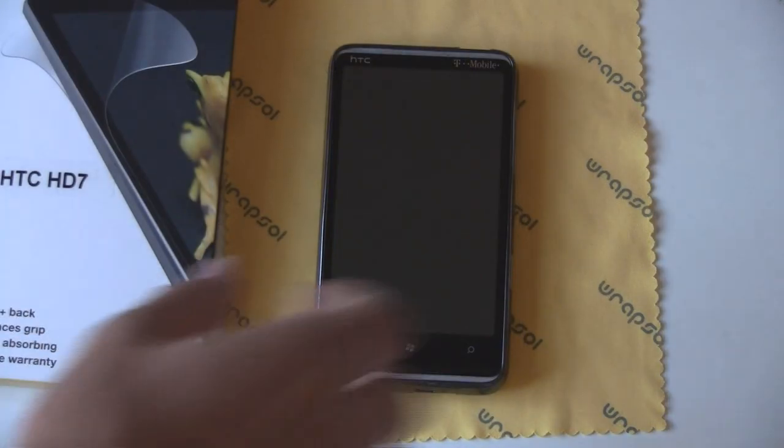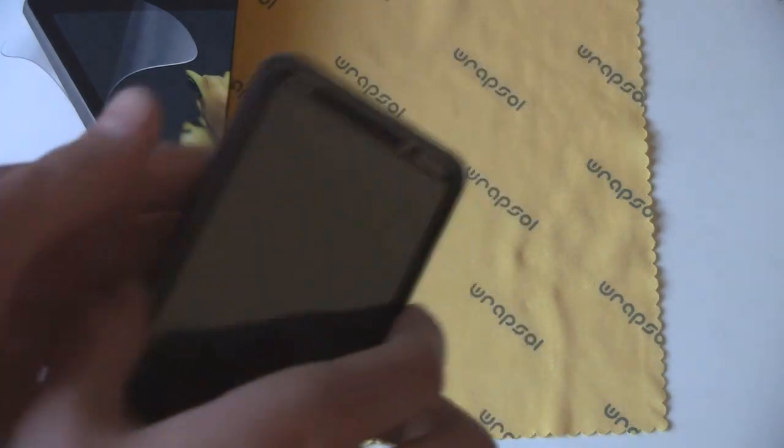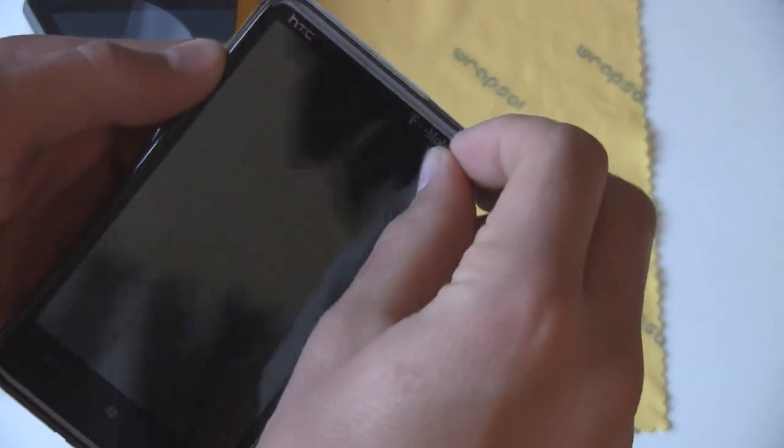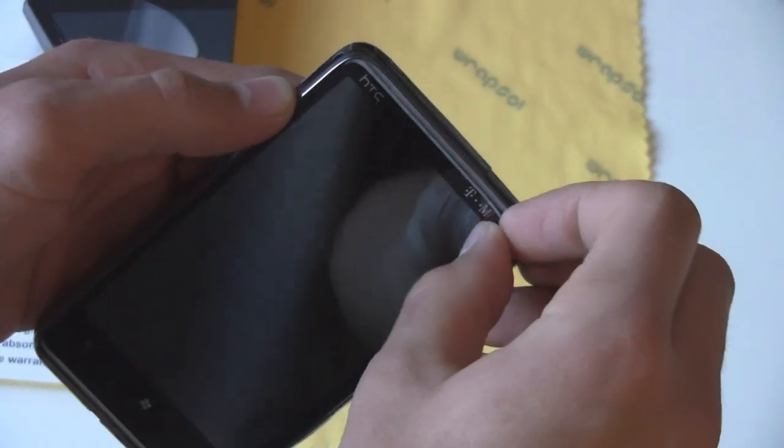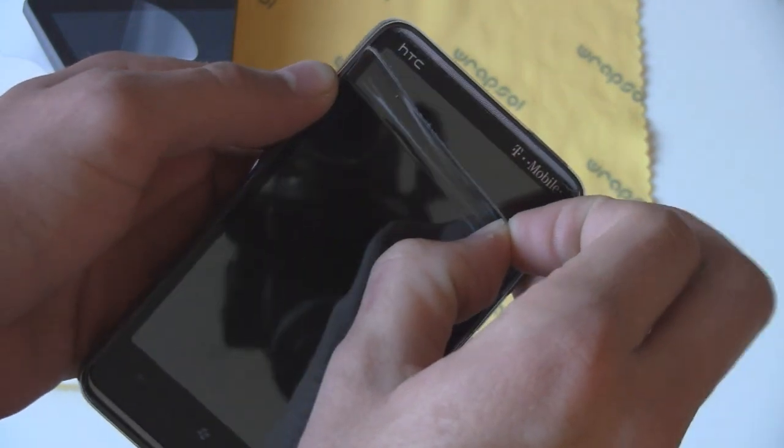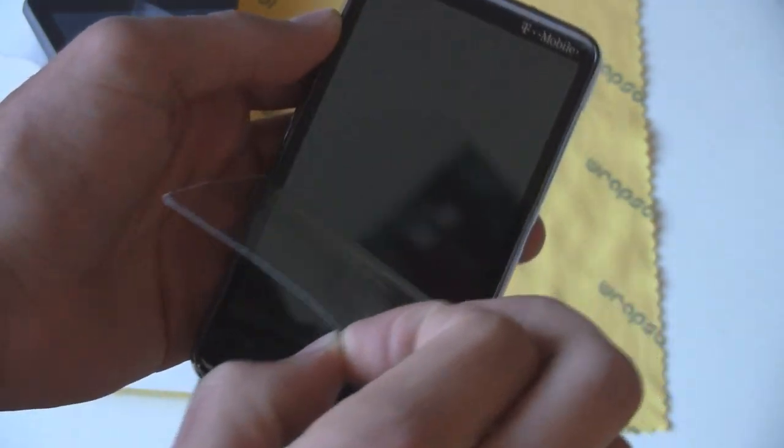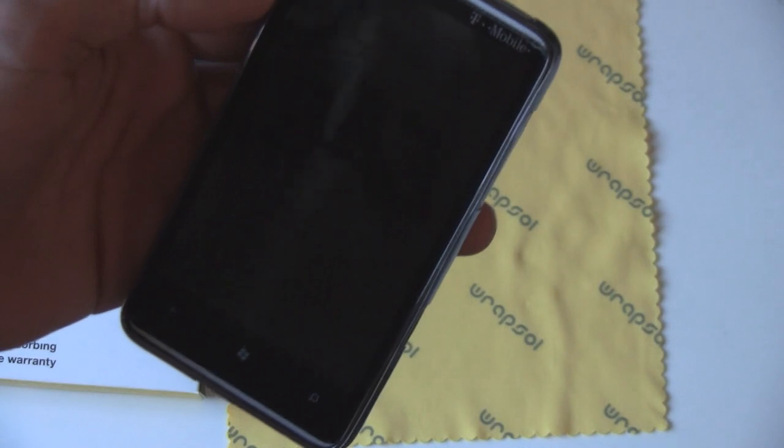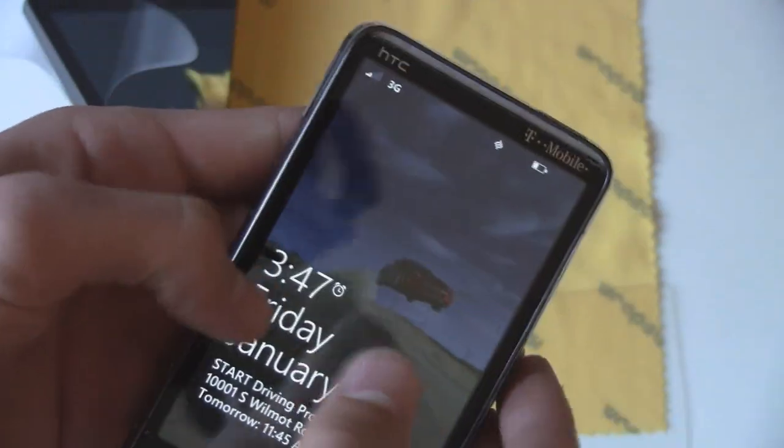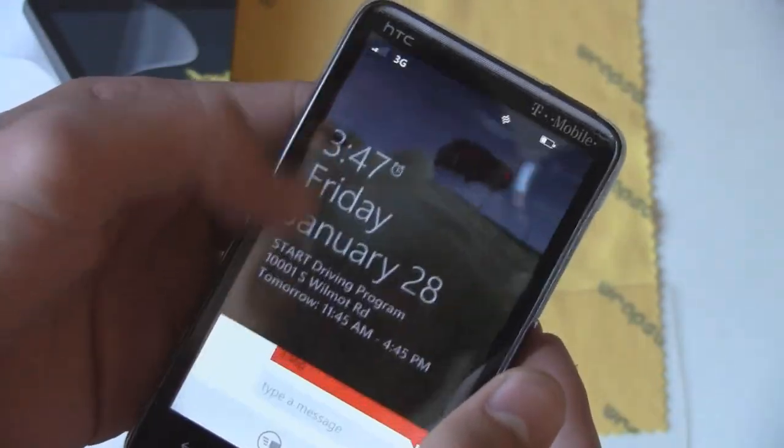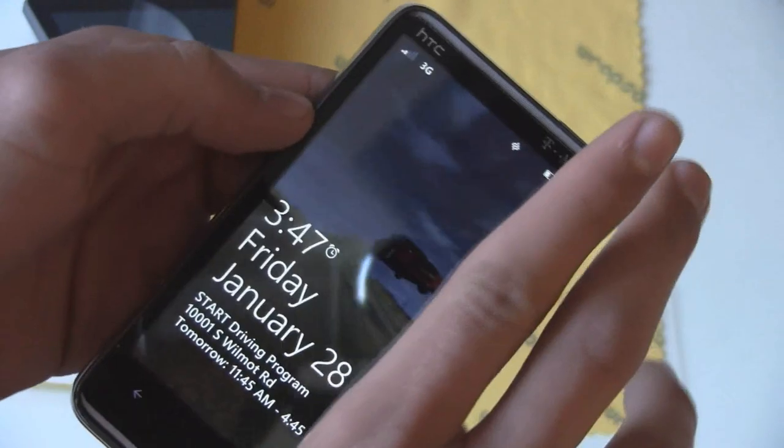Oh, and I also figured it'd be good to show you how the Rapsil product actually removes in case you want to ever take it off. Because I'm going to have to take it off anyways to try Invisible Shield next. So, you just peel it off, and it comes off really easily. And it leaves absolutely no residue. The screen feels really nice, and it's perfect underneath there.